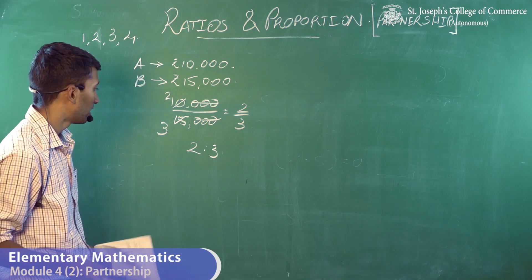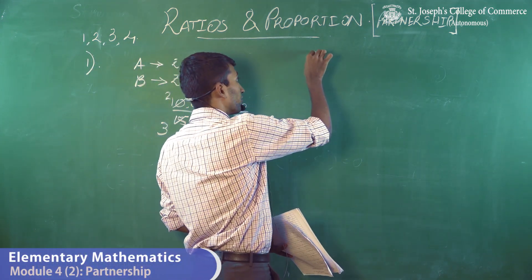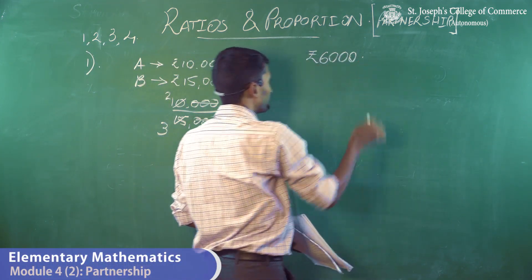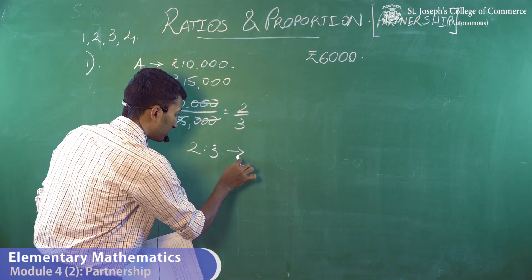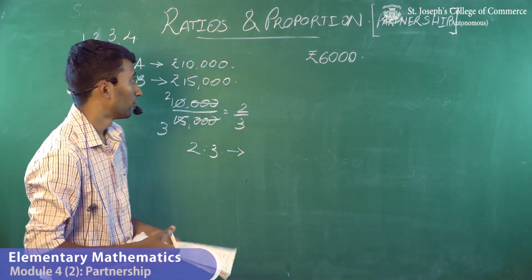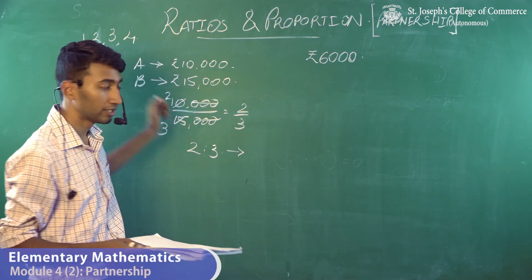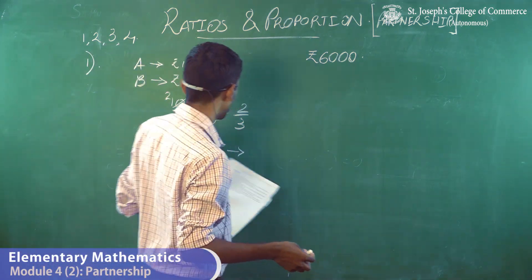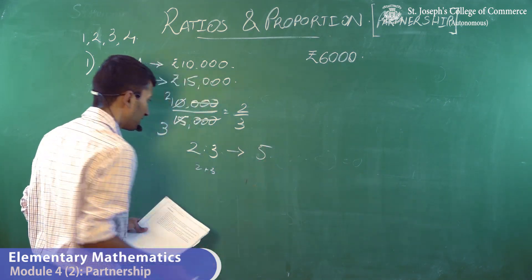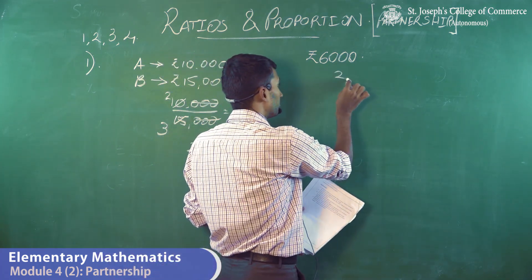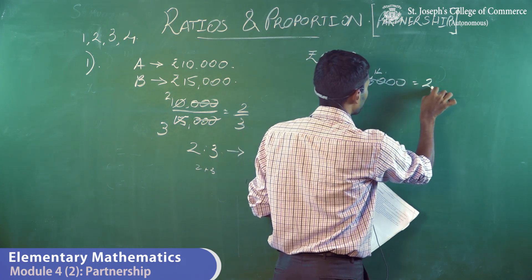Simplifying, five twos are 10 and five threes are 15, so the ratio is 2:3. That means for every two rupees A invested, B invested three rupees. Now they have a profit of 6,000 rupees. That 6,000 should be divided between A and B in this proportion — there are five parts in total (2 + 3). A gets two parts out of five, so two-fifths of 6,000 equals 2,400.